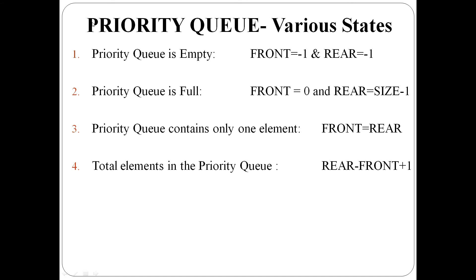Various states of a priority queue. Priority queue empty condition: front and rear are both minus one. Priority queue full condition: front is zero and rear is size minus one. Priority queue with one single element: front and rear are the same. Total number of elements in the priority queue is rear minus front plus one.